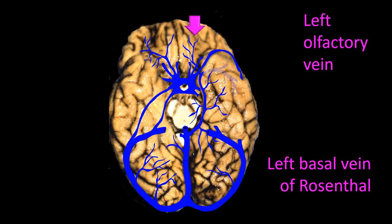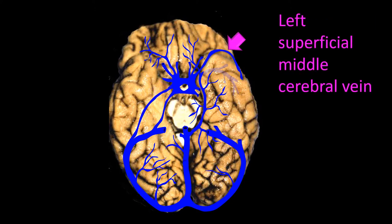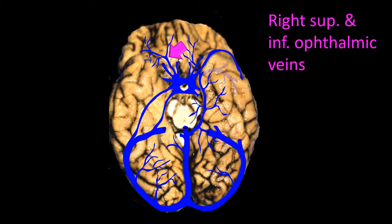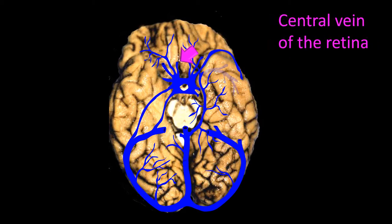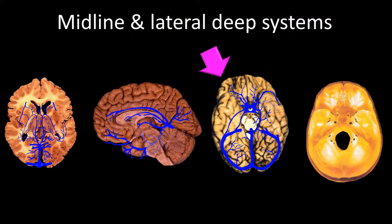It is also important to identify the cavernous sinus, the superficial middle cerebral vein, the sphenoparietal sinus, the superior and inferior ophthalmic veins, and the central vein of the retina. So we have looked at the inferior cerebral view.